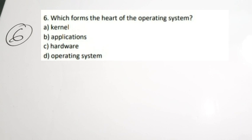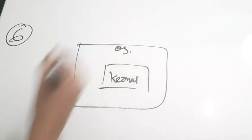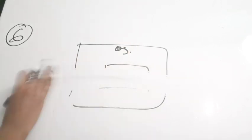Sixth question: which forms the heart of the operating system? Options: A — kernel, B — application, C — hardware, D — the operating system. The heart or core of an operating system is called the kernel. The kernel controls hardware and deals with interrupts, I/O, memory, and all other important operations. The correct answer is A — kernel.